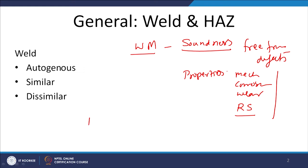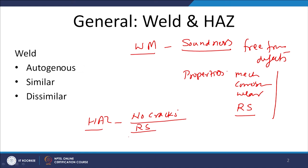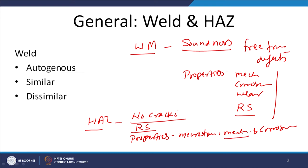Apart from this, the heat affected zone properties are also looked into — whether the heat affected zone is sound, meaning no cracks, and the kind of residual stresses present, and the properties it has in terms of microstructure, mechanical properties, and corrosion properties. Sometimes hardening takes place which leads to embrittlement; sometimes softening takes place in the heat affected zone which promotes fracture. Unfavorable metallurgical transformations in the heat affected zone lower the corrosion resistance, and all these things happen due to unfavorable metallurgical transformations — meaning the development of microstructure.